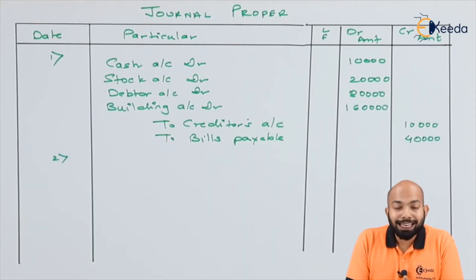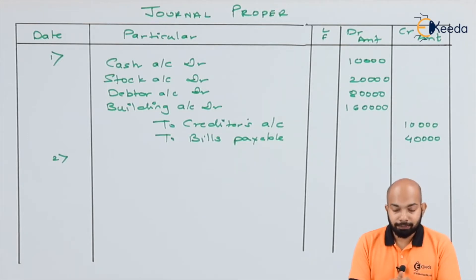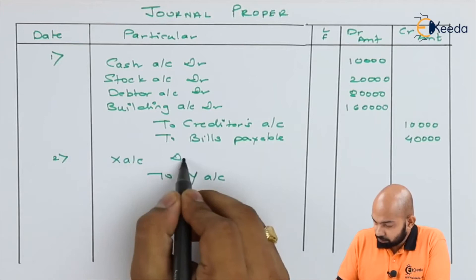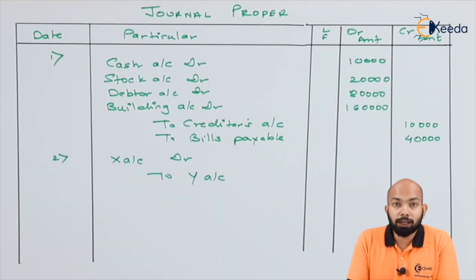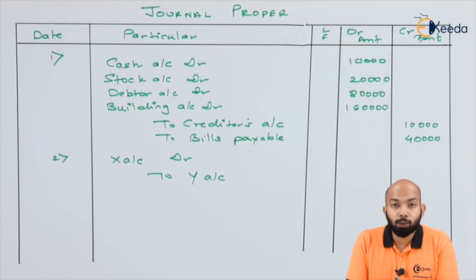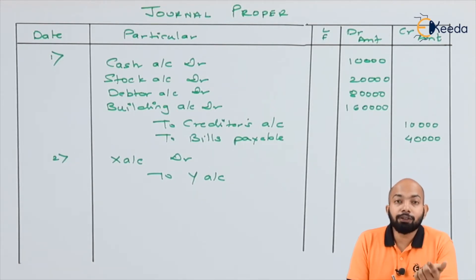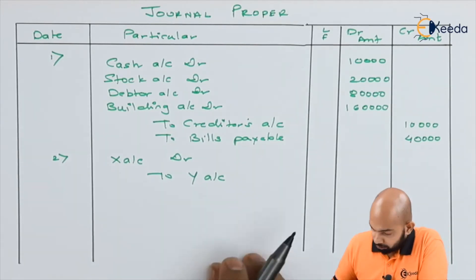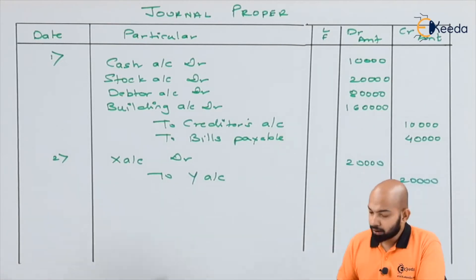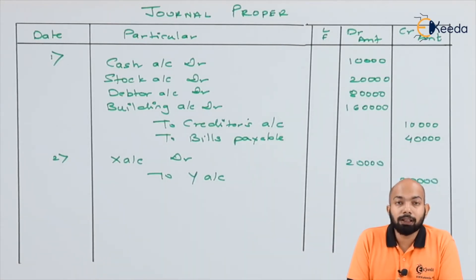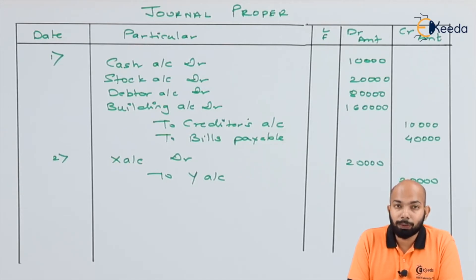Now for the second transaction — a transfer from X account to Y account. Something already credited to X account is now supposed to be credited to Y's account. Hence Y's account is credited. X, which was ideally credited first, now has to be reversed — hence we debit X account. The amount is 20,000.